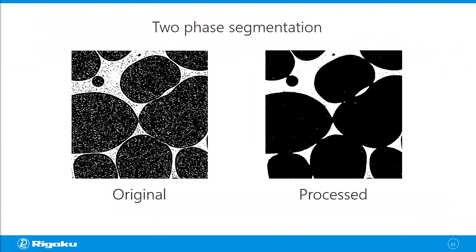There are two schools of thought about how to do this. One is to process the original image quite a bit until simple segmentation gives you clean results. The other way is to keep the original image as-is and get creative about the segmentation method to achieve clean results. Depending on your background, you might be surprised by the amount of processing done to original images. Processing is essentially data reduction — whenever you process the original image you are always losing some information or changing the original data. It's best to avoid excessive processing if you can get clean segmentation without it.